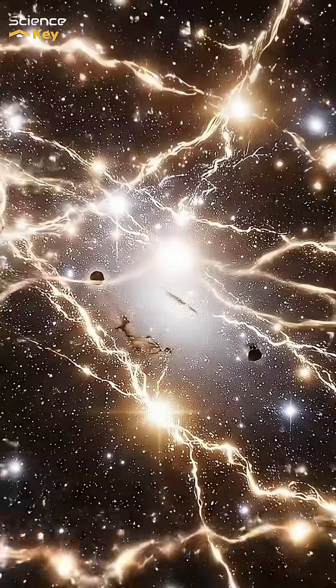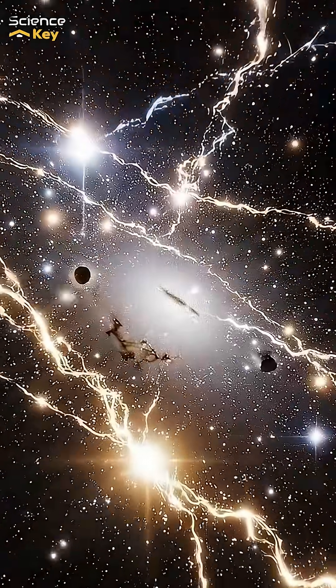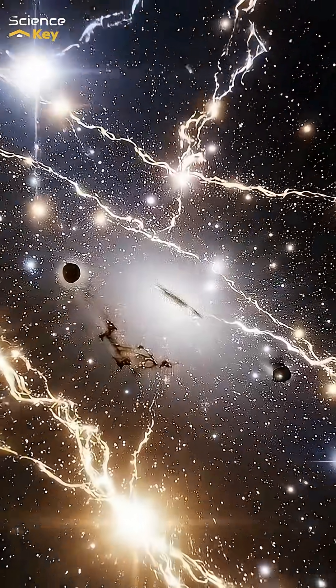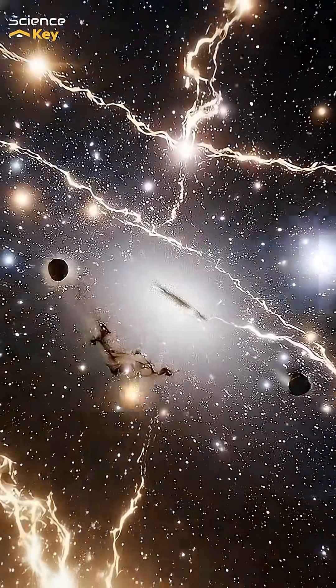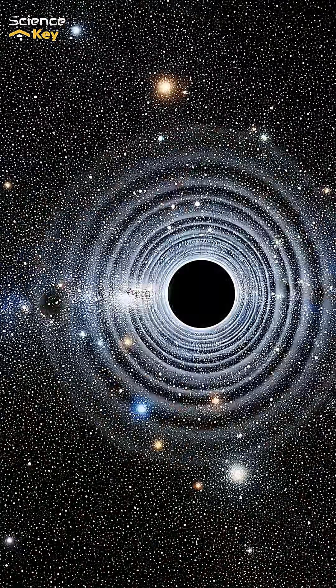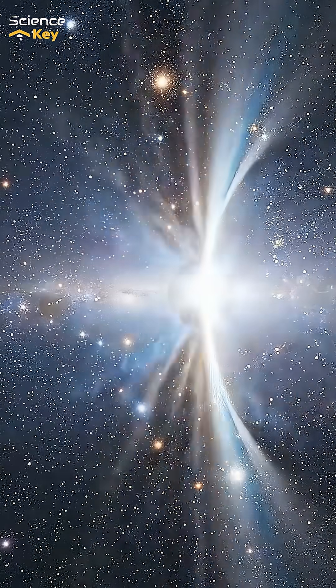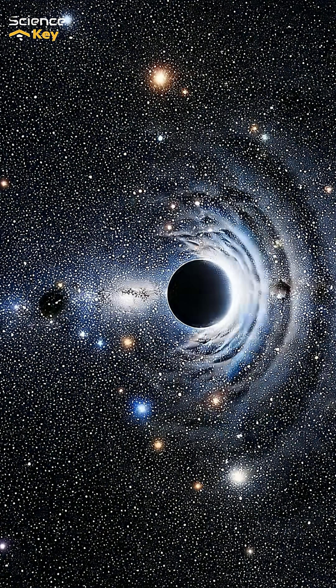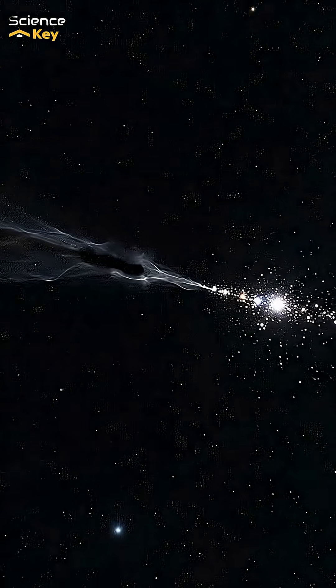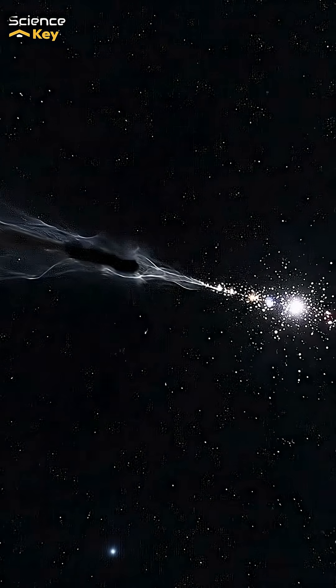We refer to the visible part as the cosmic web, but beneath it may lurk stranger, darker filaments of some unknown material. They do not shine nor interact with light, yet their gravity bends it. Their fingerprints show up in galaxy clustering and ancient radiation.